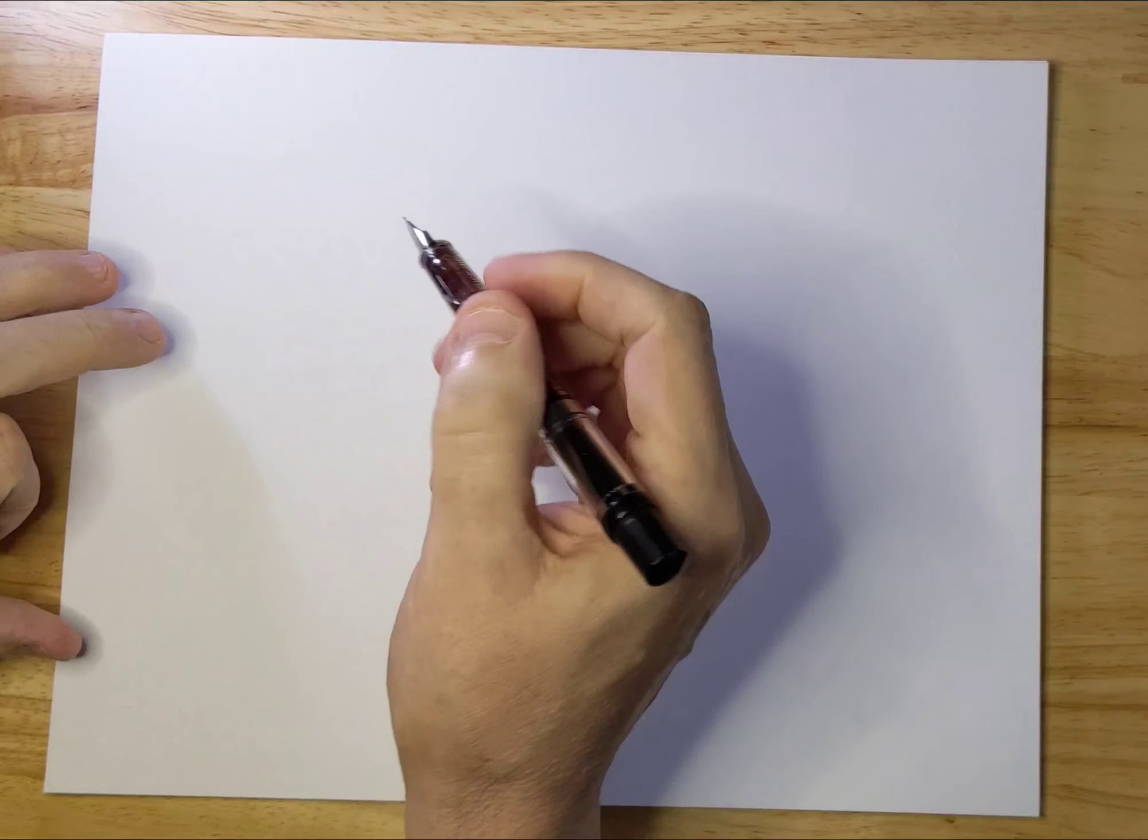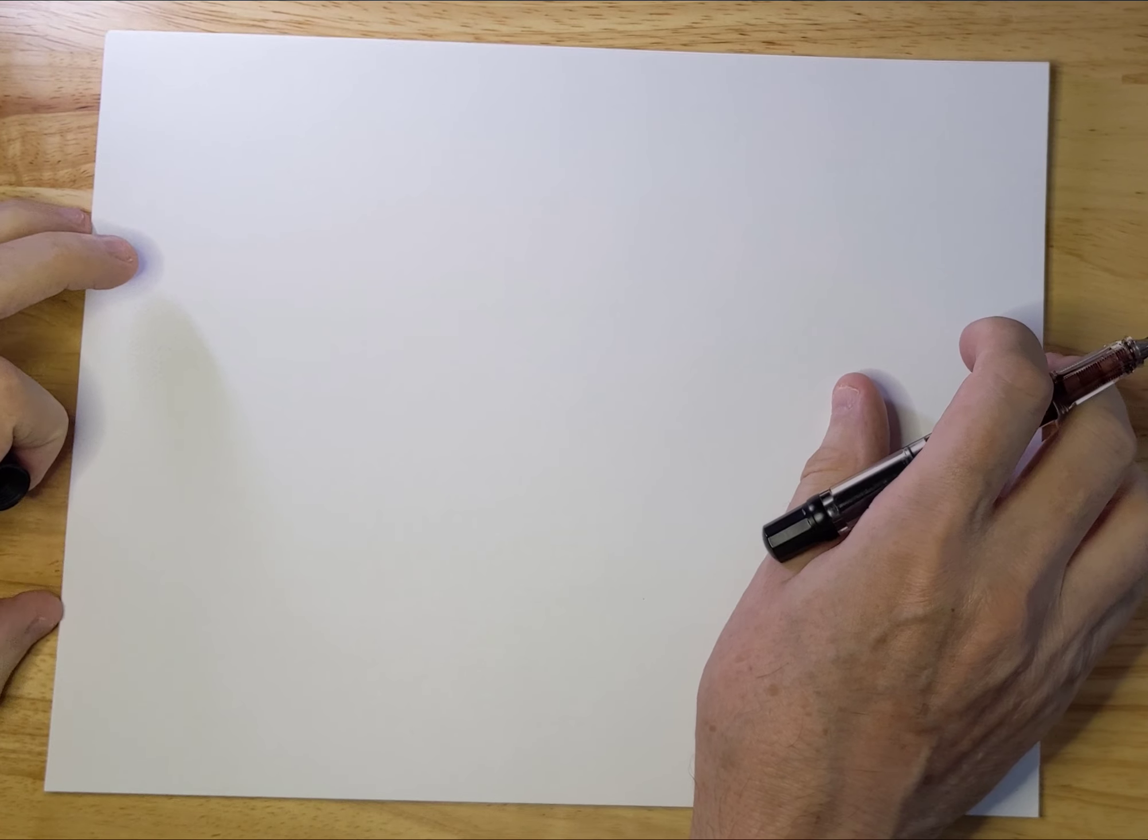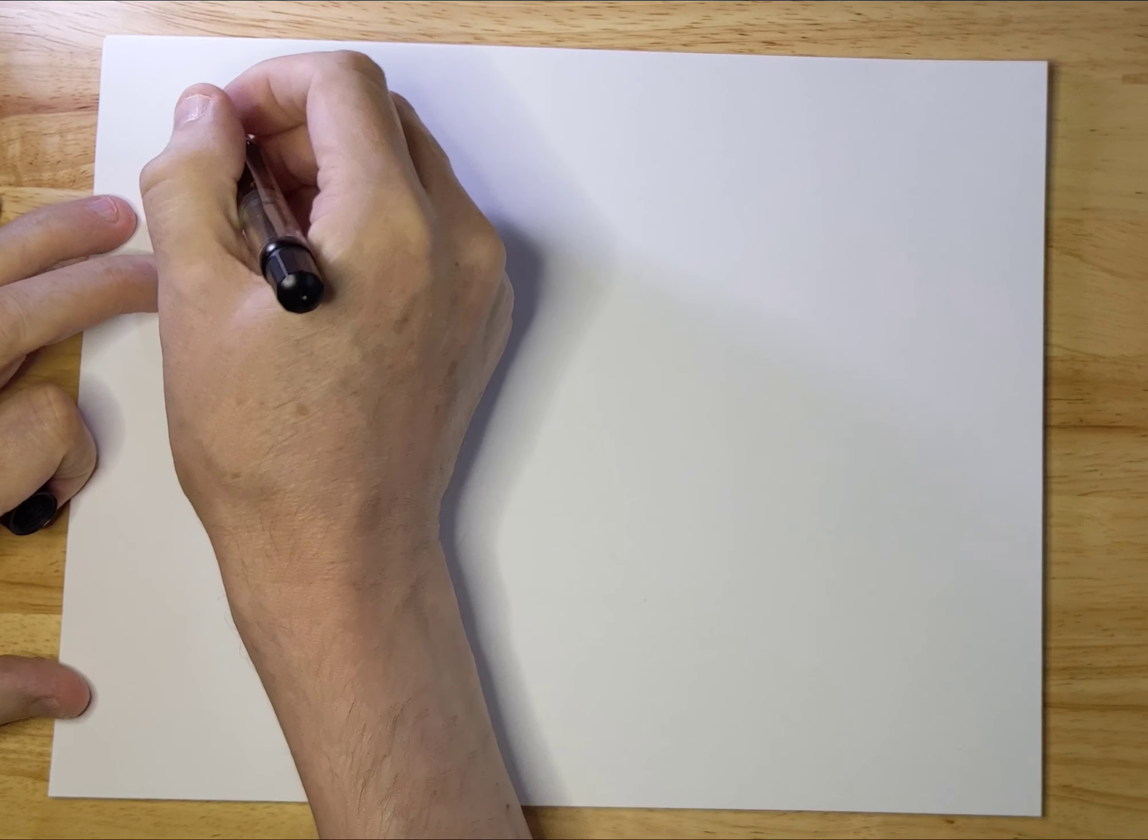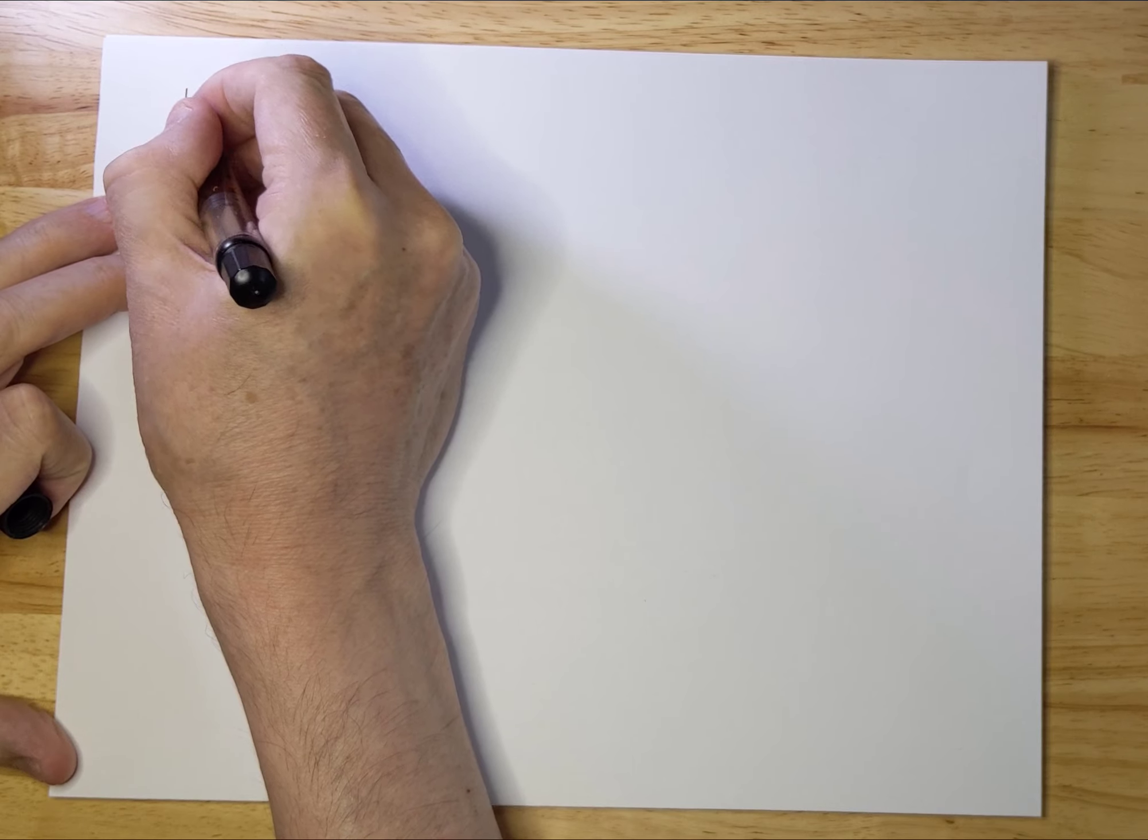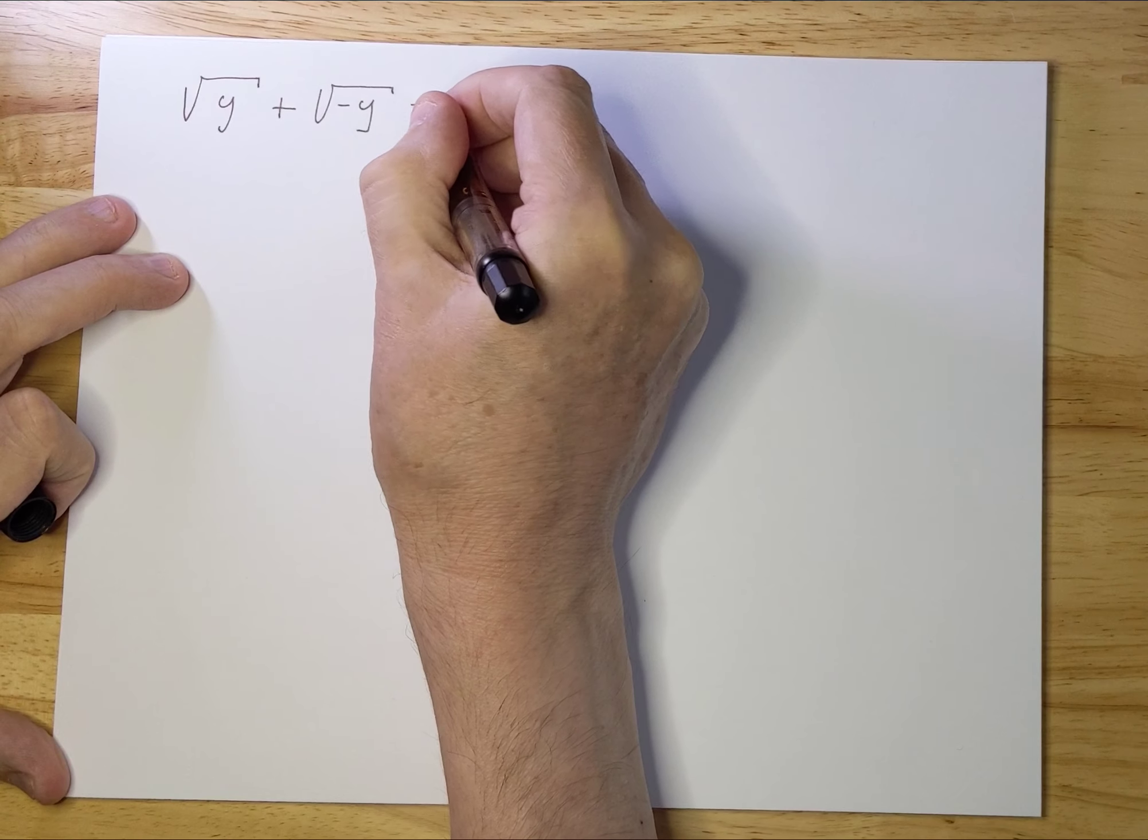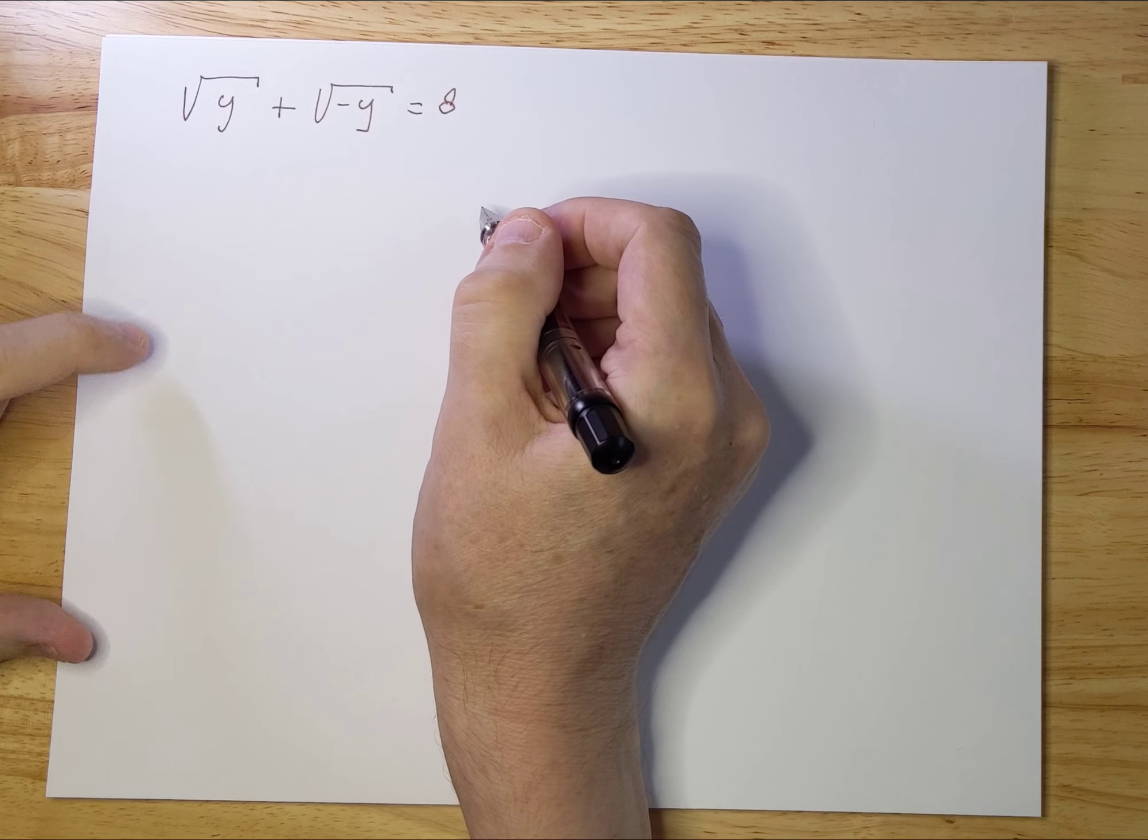Today I'm going to talk about a special equation that I've seen being solved on the internet, but I do it in a slightly different and more elegant way. The equation is: √y + √(-y) = 8, though the specific number doesn't really matter.